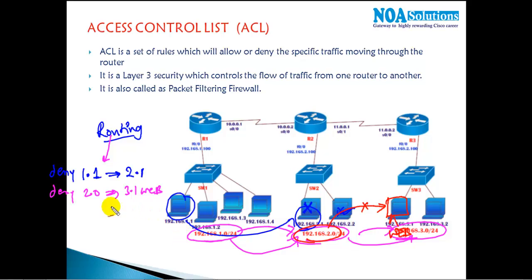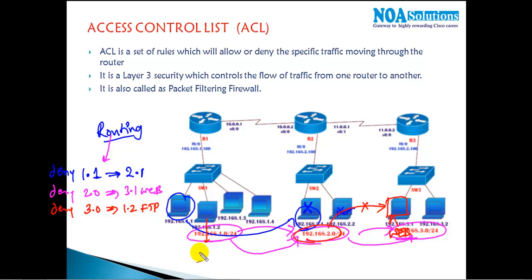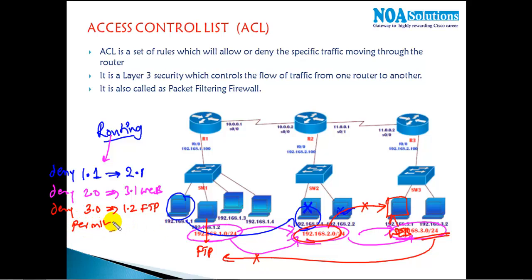Or you can write rules like: deny specific traffic from the 3.0 network going to the 1.2 FTP server. Assume there is an FTP server and I want to ensure all 3.0 users should not access the 1.2 FTP service, but all remaining traffic should be permitted.